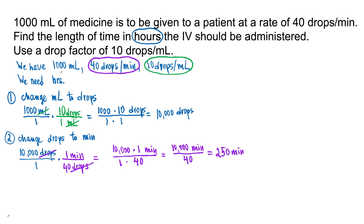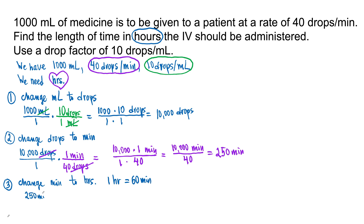We found minutes, but we need to find hours. Next we are going to change minutes to hours. We have 1 hour equals 60 minutes. We are going to write 250 minutes over 1, then multiply. We want to get rid of minutes and have hours, so we put 60 minutes on the bottom and 1 hour on top in the numerator. We are actually dividing by 60 — 250 divided by 60.